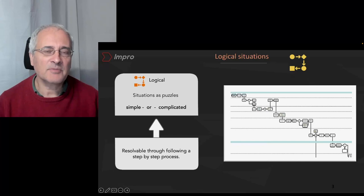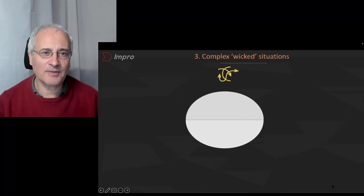The behaviors that we use in a logical situation are logical. They're structured. They're step by step. They're cause and effect. And what we're now going to do is compare this to what is complex.